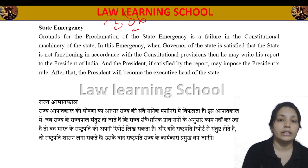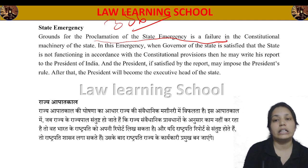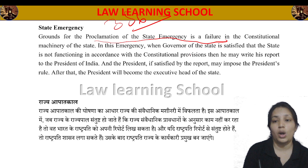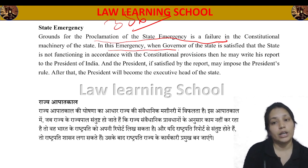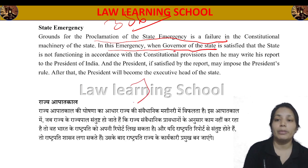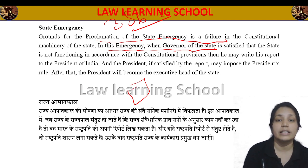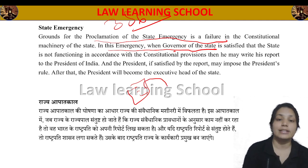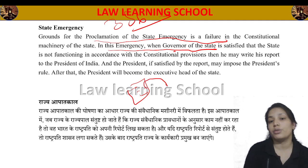State Emergency is given in Article 356. The ground for proclamation is when a state is not functioning properly, the constitutional provisions are not being adopted there, and there is a failure in the constitutional machinery of the state. Then emergency is imposed in that state, and the Governor makes a report.